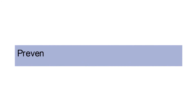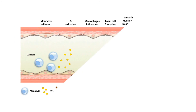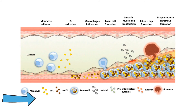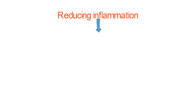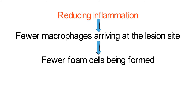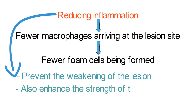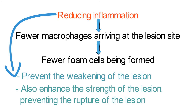Prevention and Treatment of Atherosclerosis. Chronic inflammation is linked to atherosclerotic plaque buildup. Therefore, suppressing inflammation can help prevent and treat atherosclerosis. Reducing inflammation can lead to fewer macrophages arriving at the lesion site, resulting in fewer foam cells being formed. Furthermore, inflammation contributes to the weakening and eventual rupture of the lesion. Keeping inflammation down can prevent the weakening of the lesion and enhance the strength of the lesion, preventing rupture.